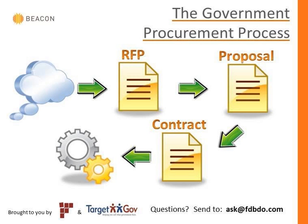This slide is an extreme oversimplification of the government procurement process. Basically it starts with the government having an idea or a need, and then they capture this need in an RFP — a request for proposals. You'll get the RFP from a variety of sources, such as fedbizops.com. Then you'll craft the proposal, hopefully get award of the contract, and begin the work. Parts of the RFP are actually going to become the basis for your proposal, and then parts of the proposal and the RFP are going to become part of the eventual contract.